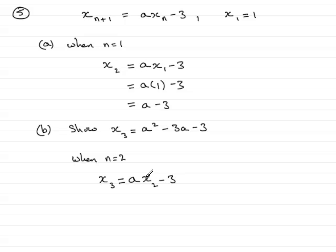Well, we already know what the second term in the sequence is, we found it in part a, it's a minus 3, so all we've got to do is put in place of x_2, a minus 3, and then we've got this minus 3 on the end.